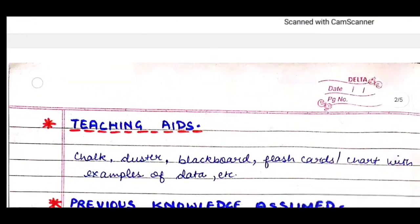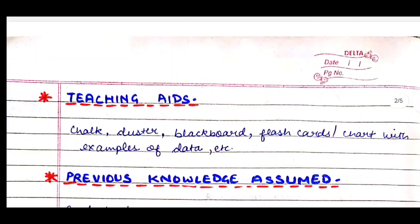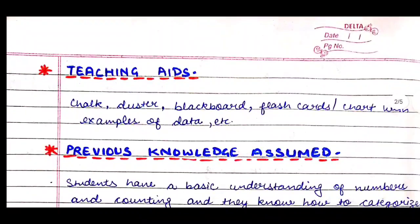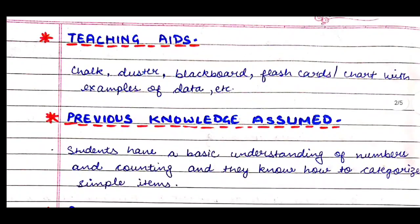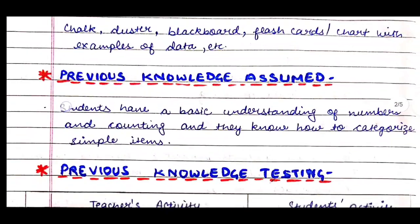The next heading in our lesson plan is teaching aids. Here we write all the material required by the teacher to teach the topic. We need chalk, duster, blackboard, flashcards, a chart with examples of data, etc. You can take anything relevant.